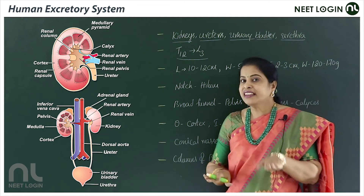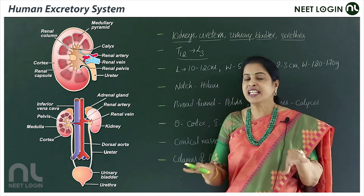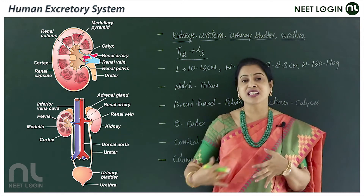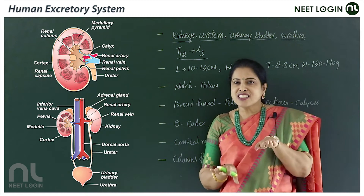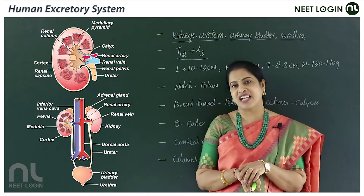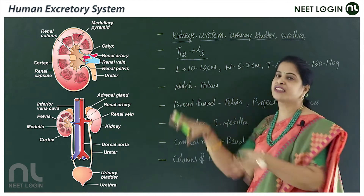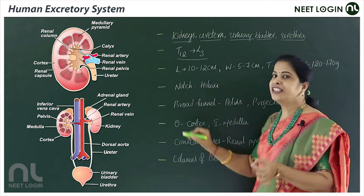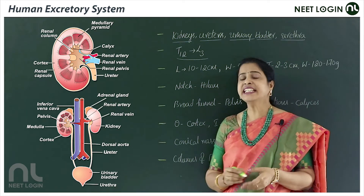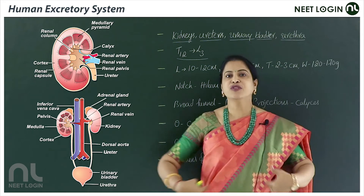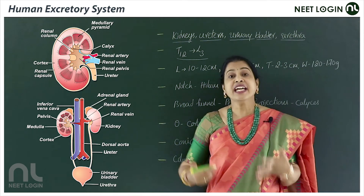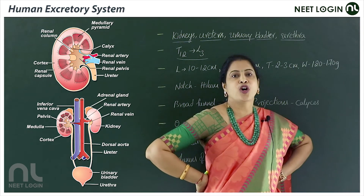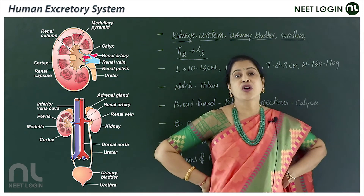Both kidneys differ slightly in position. The right kidney is somewhat inferior because of the presence of the liver on the right side, when compared to the left kidney. The kidneys are also protected by two pairs of floating ribs.